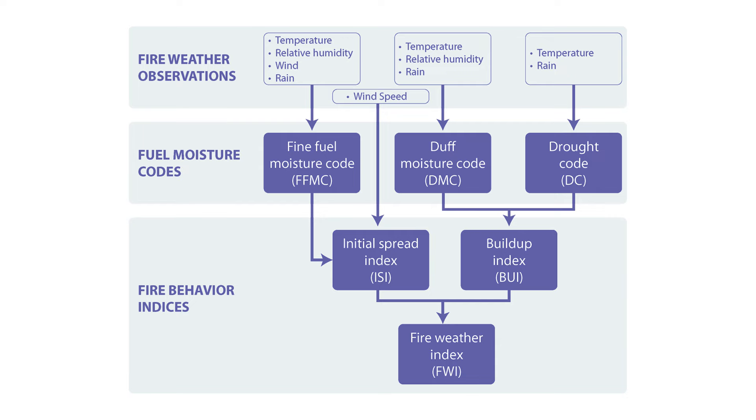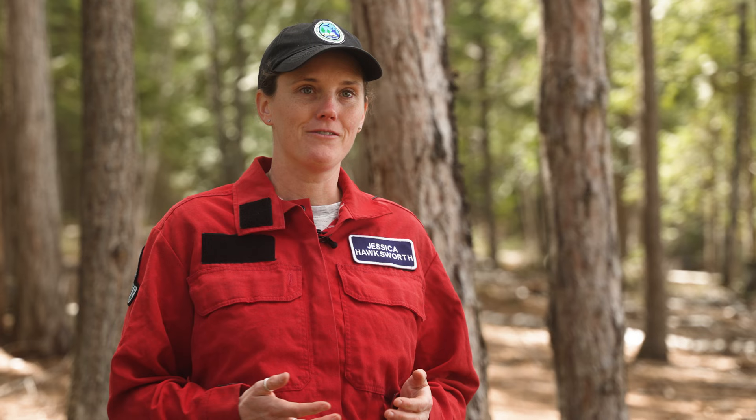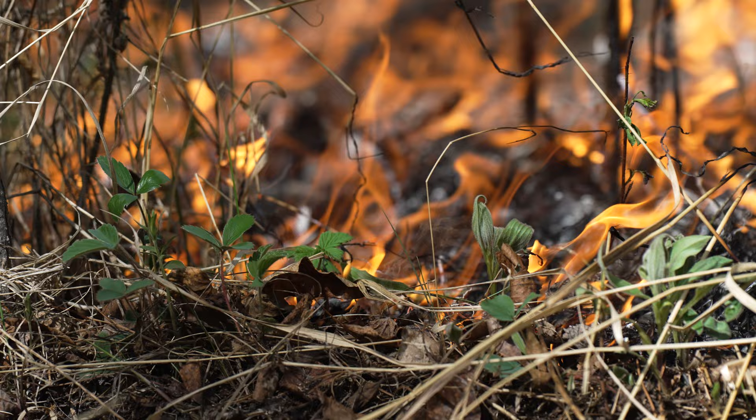The Fire Weather Index System, or FWI, is made up of six key components. The first three are fuel moisture codes, and these are really key elements that allow us to determine how available the fuels are to burn. After that, we combine down into indices that really allow us to see how quickly a fire will spread, how easy it is to ignite, and then how much of that fuel will actually be consumed.